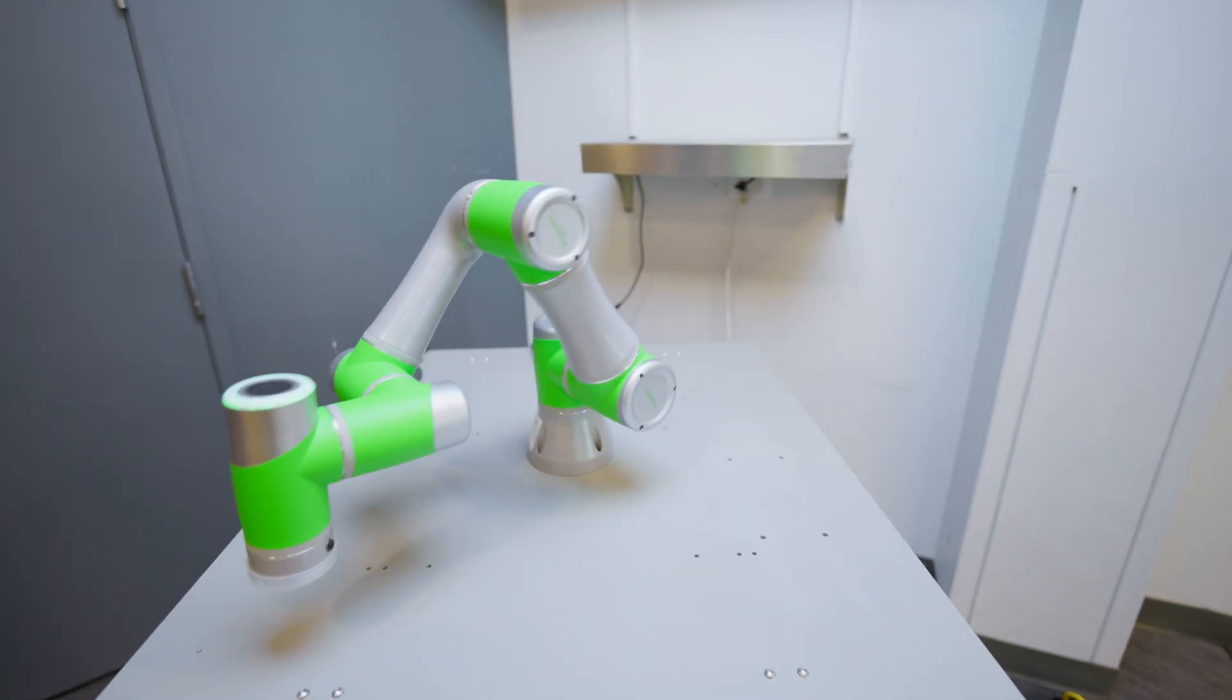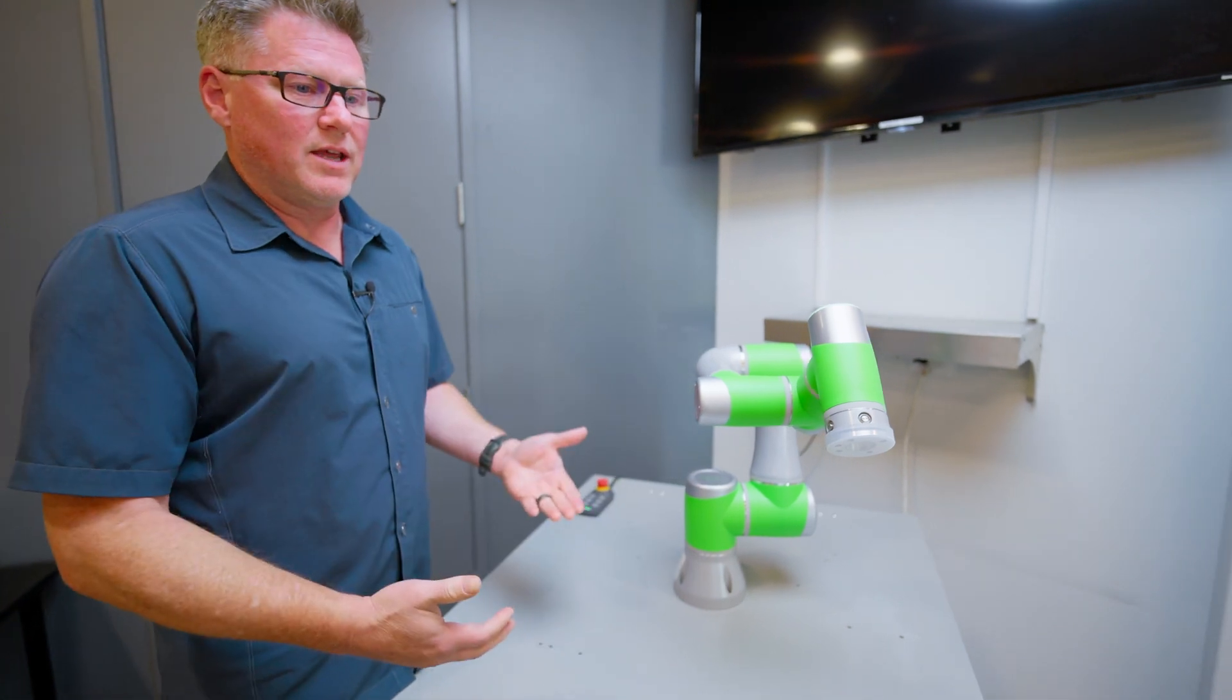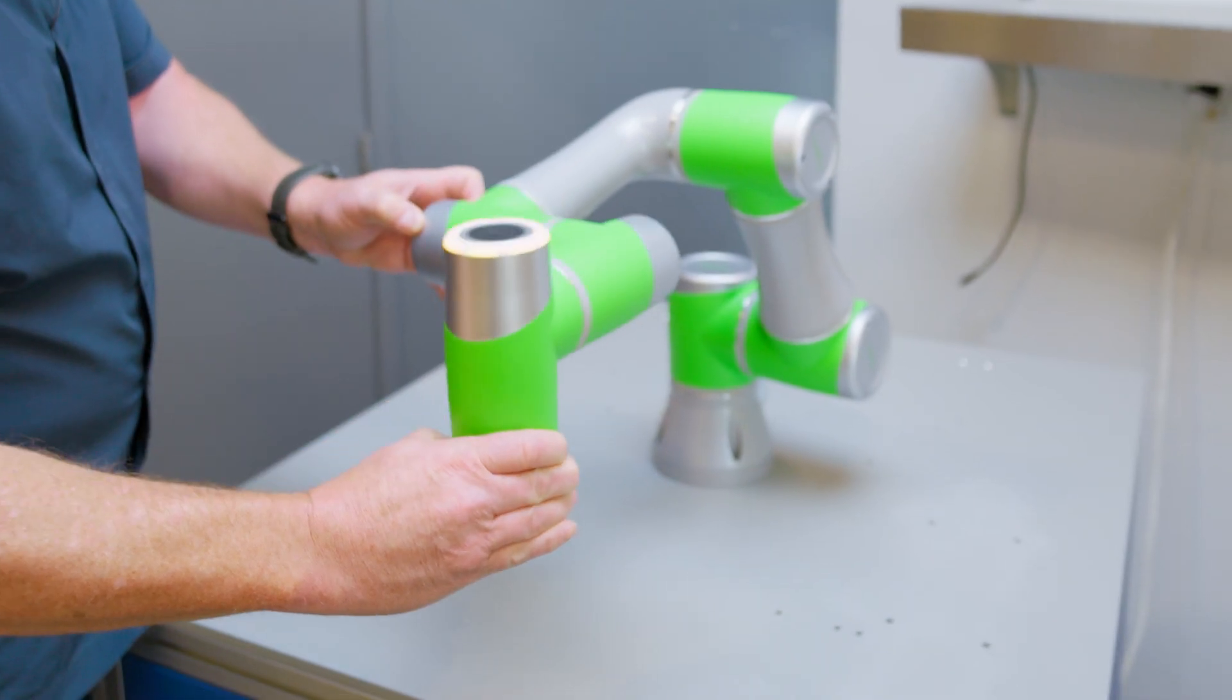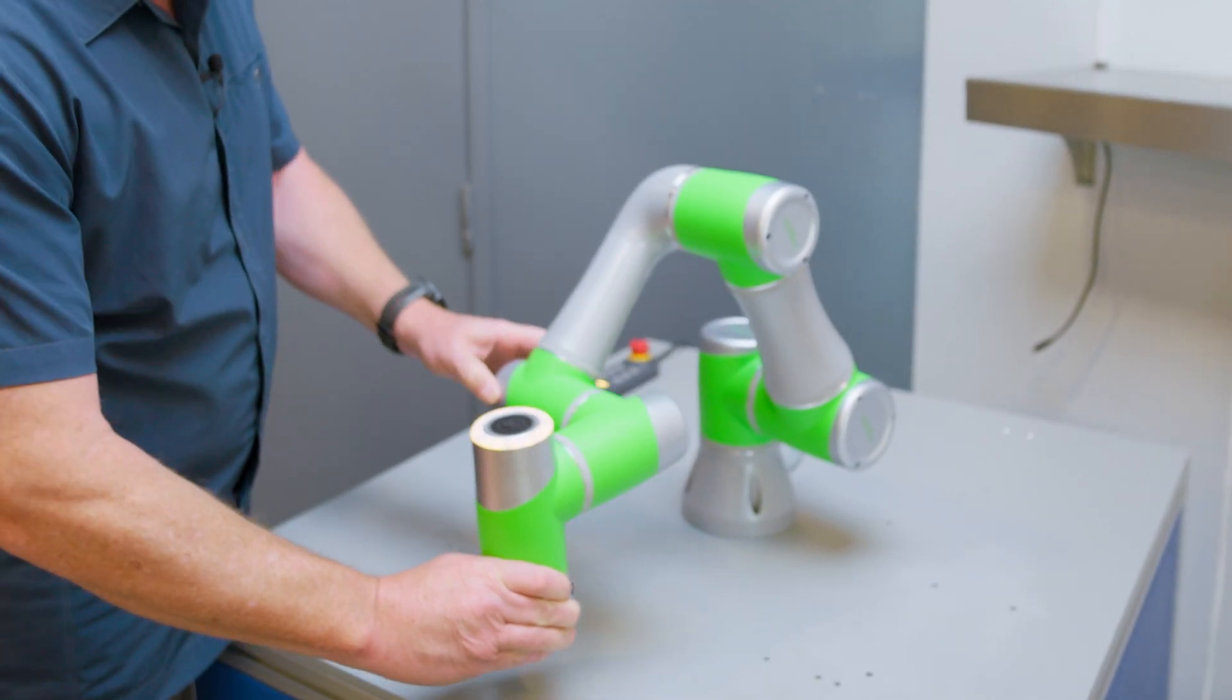One of the cool things about interacting with a CoBot is it allows the human to move it around and do teach points. So I push this button right here and then I can actually control the robot's positioning and put it into a place.